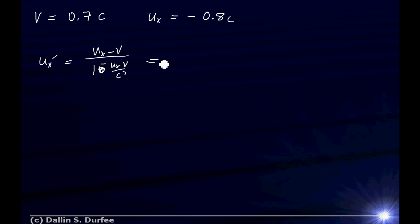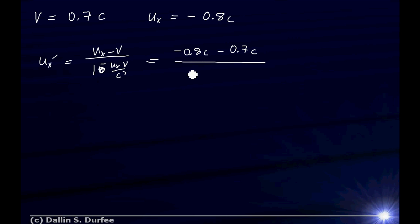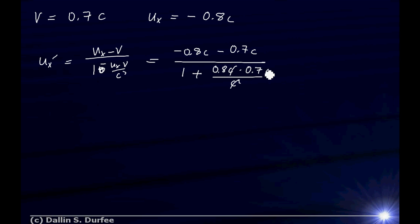We just plug stuff into that equation now. UX is negative 0.8C, minus V which is 0.7C, and we divide that by 1 minus UX — which is negative 0.8C — times the velocity of our prime frame, 0.7C, all divided by C squared. We can cancel out the C's, and I'll leave it to you to plug the numbers in.